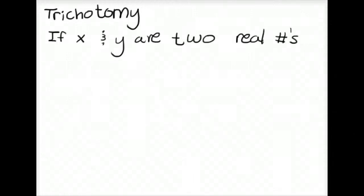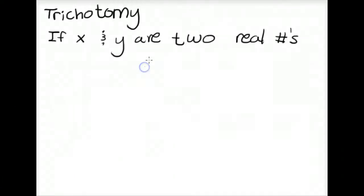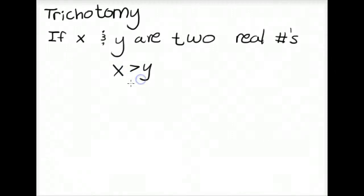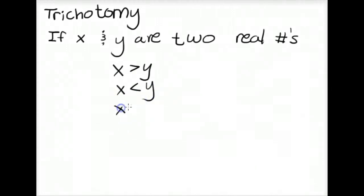The last property we're going to talk about is trichotomy. This is a fairly intuitive property — it states that if x and y are two real numbers, then exactly one of three scenarios holds: x can be greater than y, x can be less than y, or x can equal y.